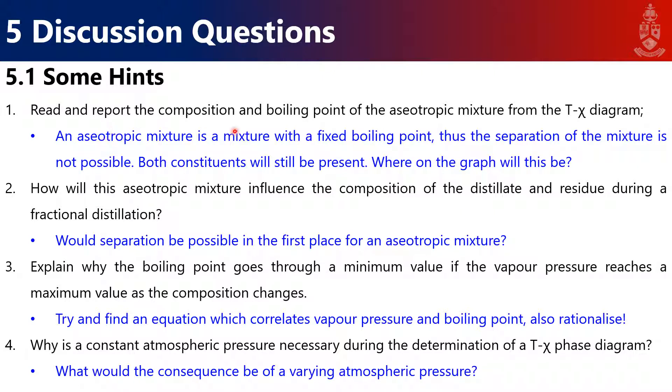Your discussion questions: Read and report the composition and boiling point of the azeotropic mixture from the temperature-composition diagram. An azeotropic mixture is a mixture with a fixed boiling point where separation is not possible—both constituents will be present. Where on the graph is this? At the point where your distillate and residue connect. That means the distillate and residue have the same boiling point, so you can't separate them. You always get the same mole fraction.